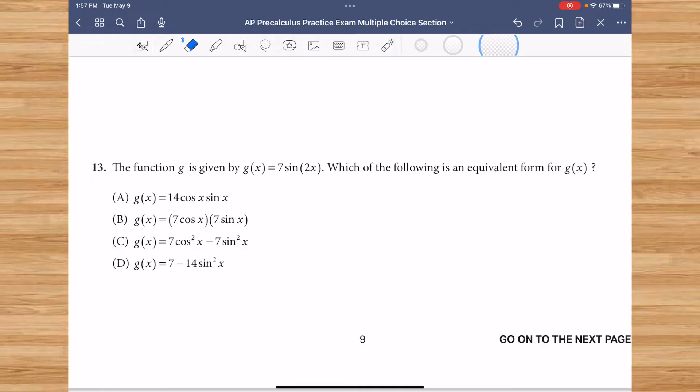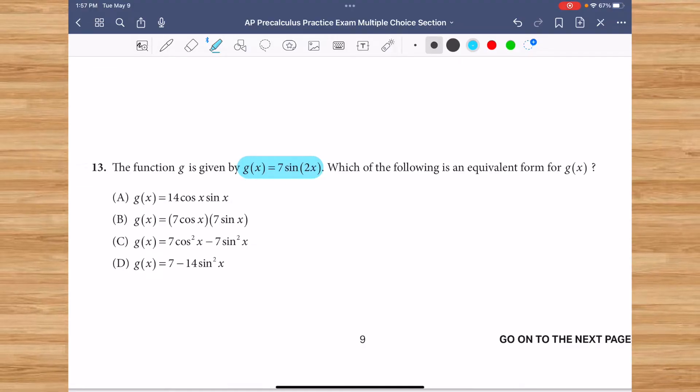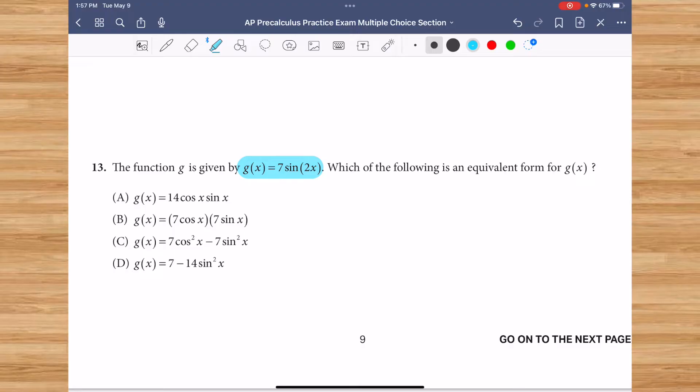Question 13 says, the function g is provided by g of x equals 7 sine of 2x. Which of the following is an equivalent form of g?